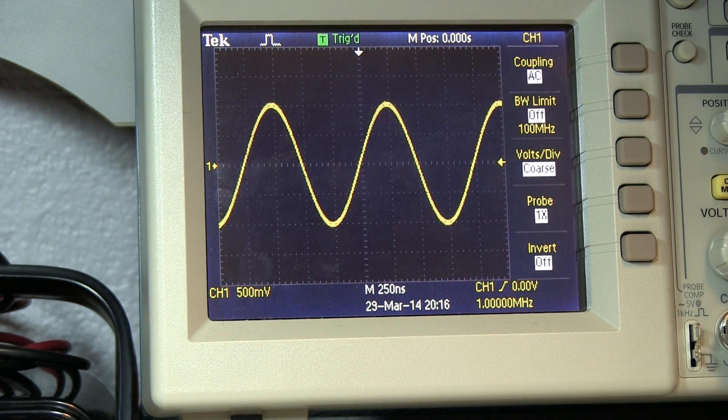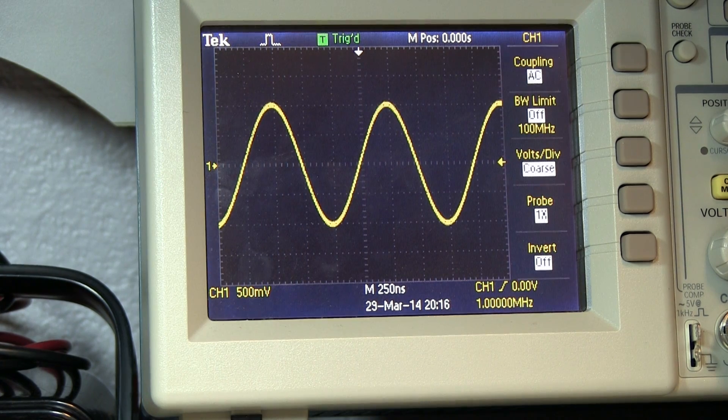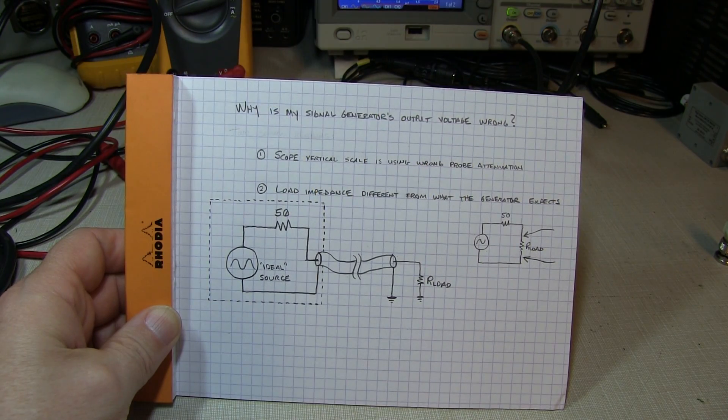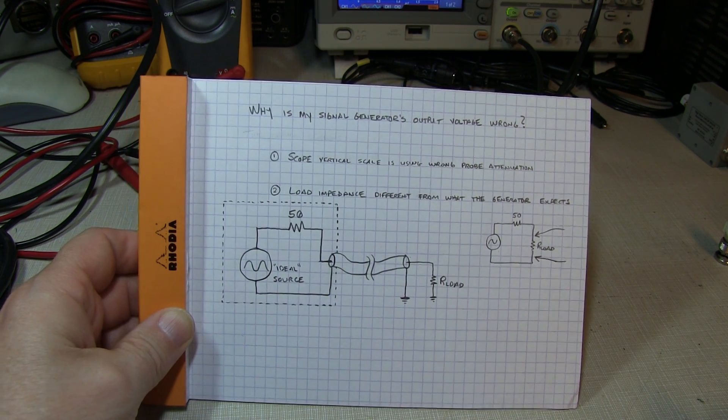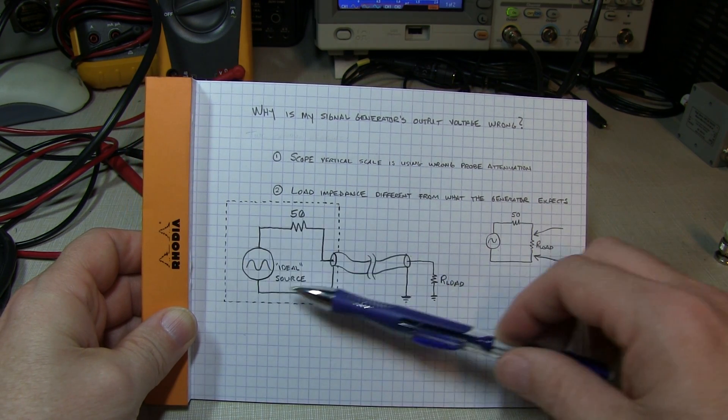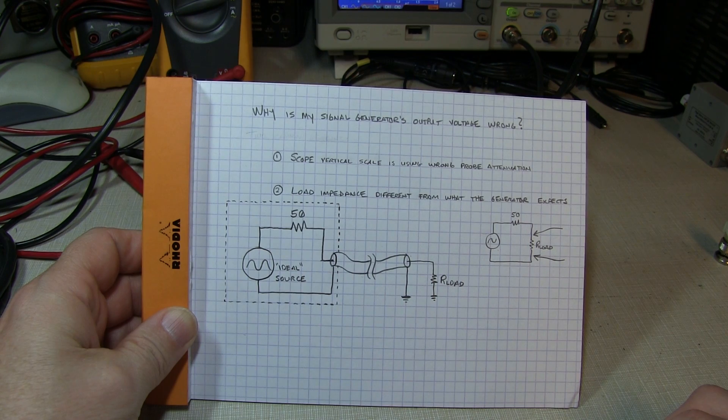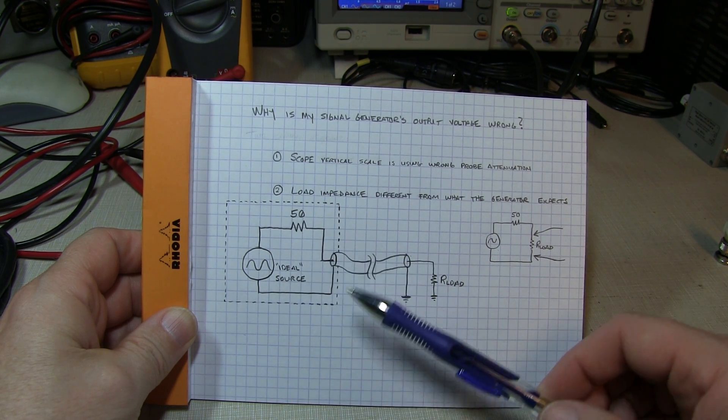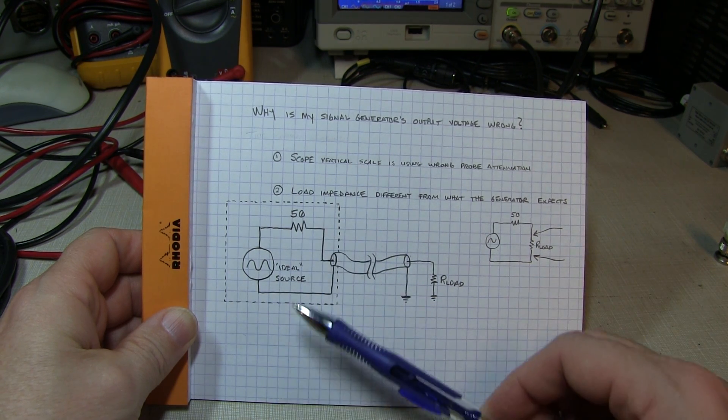The second most common reason for the amplitude to be off is due to the output impedance of the signal generator. Most signal generators, function generators, have got a 50 ohm output impedance.